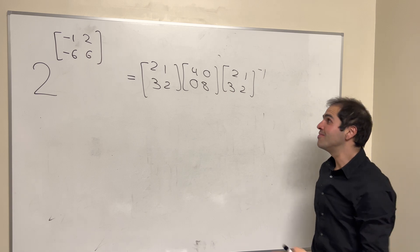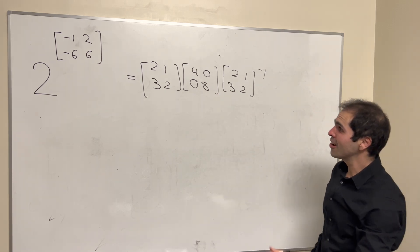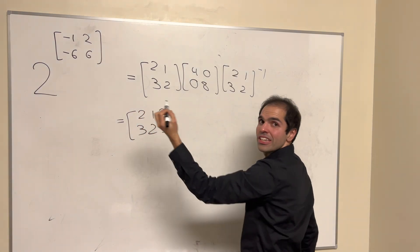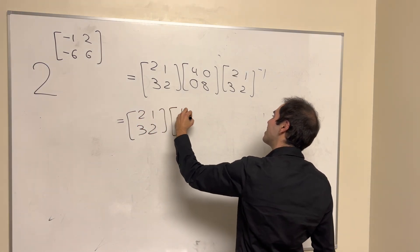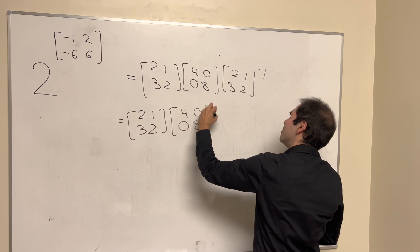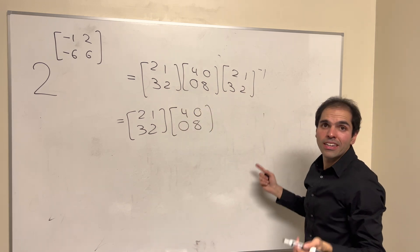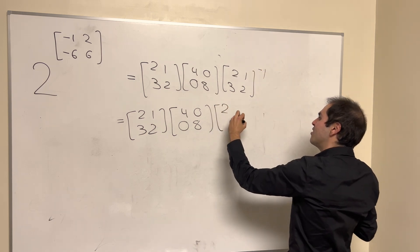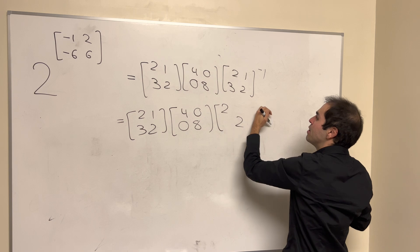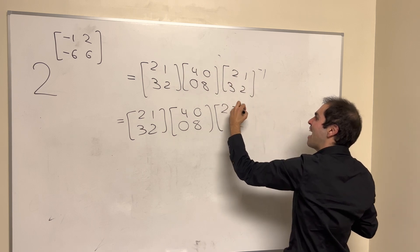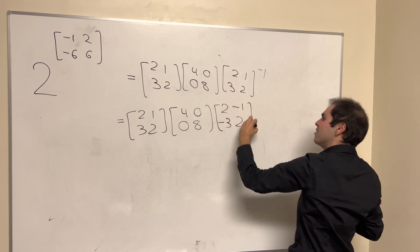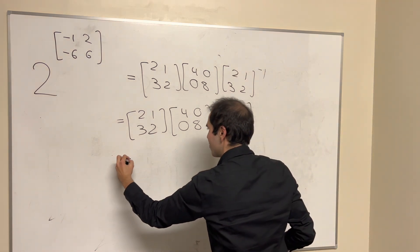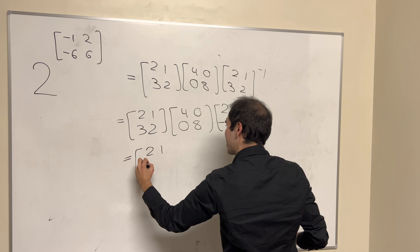So the diagonal matrix, of course, becomes as follows. Now, to calculate the inverse, you use a formula for the inverse of a 2 by 2 matrix. So 1 over the determinant, which is 1 anyway, and you switch the diagonal terms, 2, 2, and you put a minus 1 on the anti-diagonal terms. So 2 minus 1, minus 3, 2.